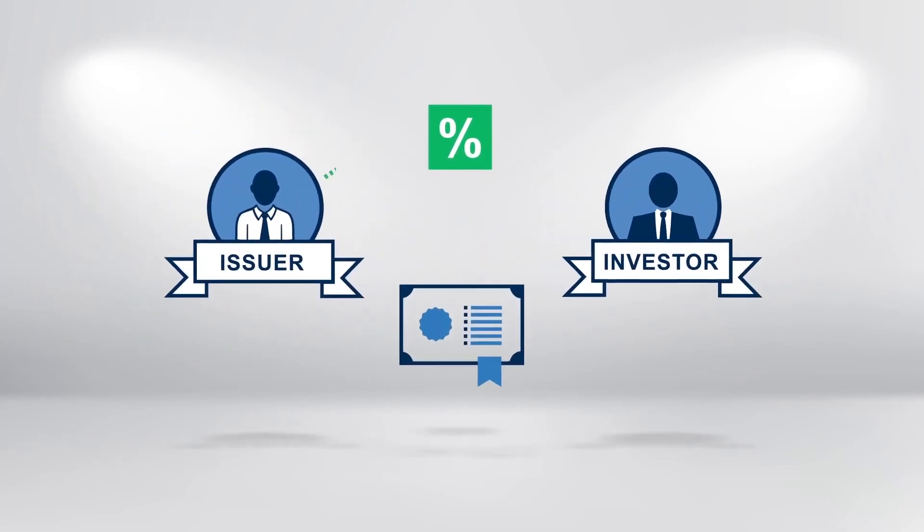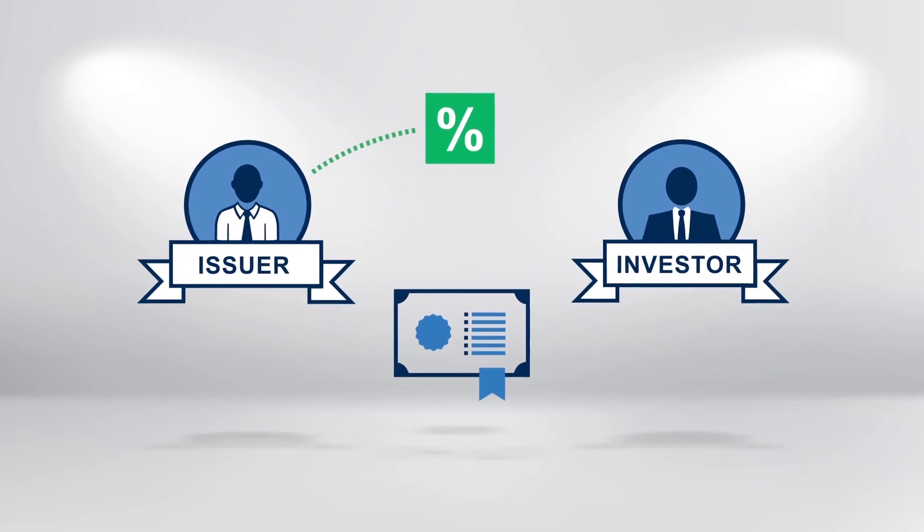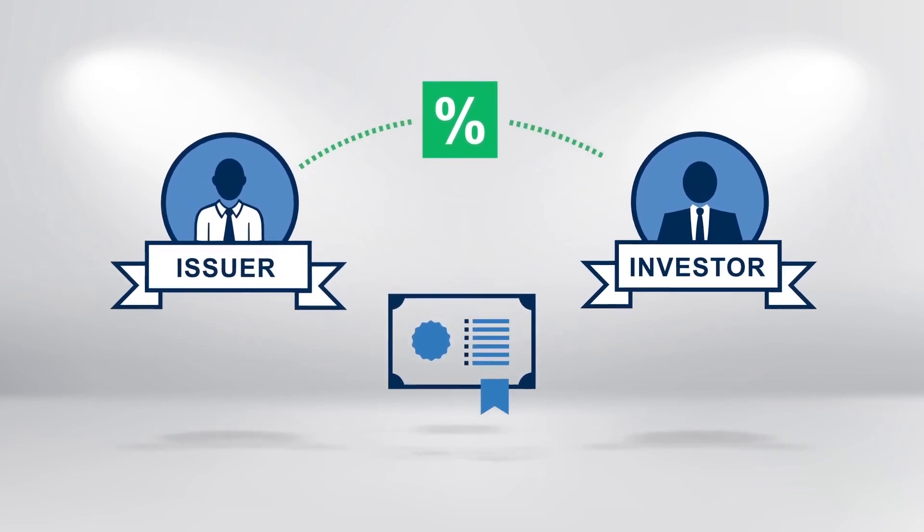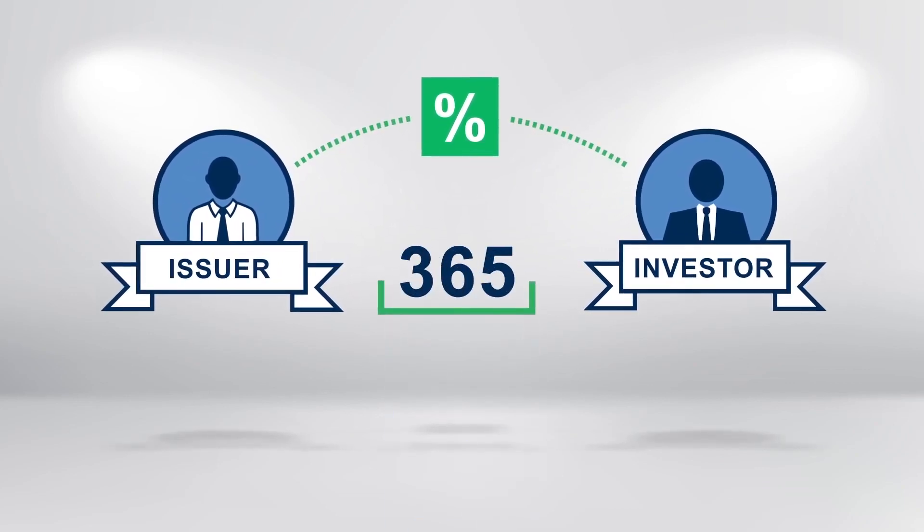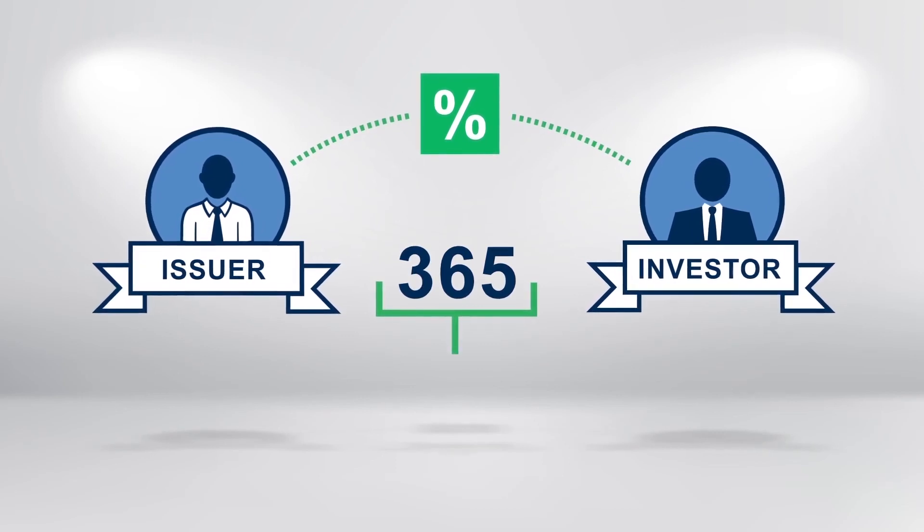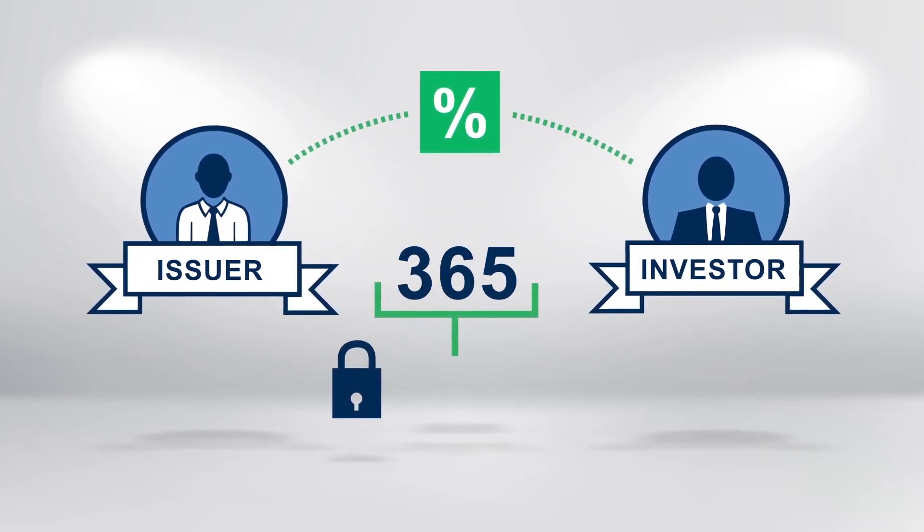The issuer pays the investor interest, also known as a coupon, for borrowing the money. The coupon is typically paid annually or semi-annually and can be fixed for the entire life of the bond.